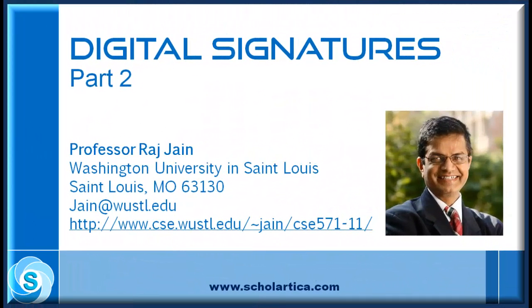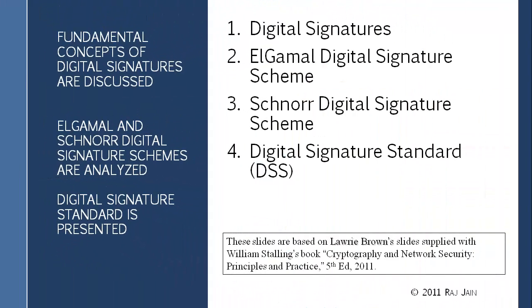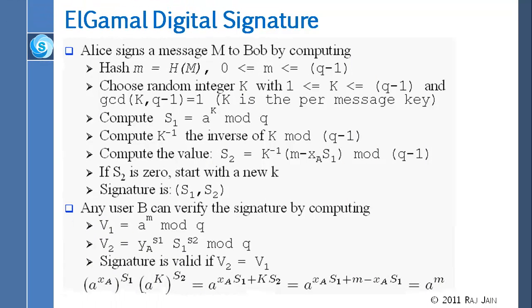So the ElGamal signature that we finished last time, I'm just going to repeat that. The way it works is that you send two numbers. The first one gives you the secret number that you have selected, and the second one then basically signs with that number.